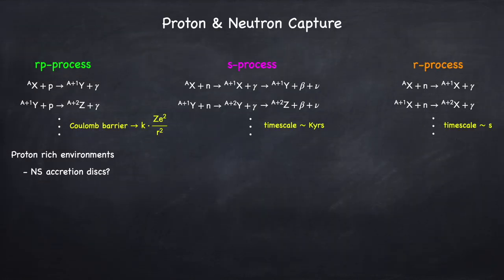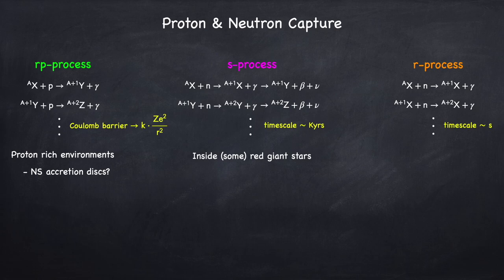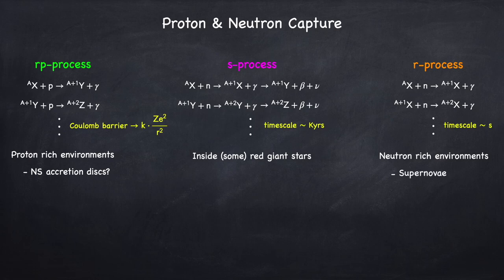Where do these processes take place? The S process takes place in certain types of red giant stars. I said at the beginning of this video that you cannot fuse beyond iron inside of stars, but that's not strictly true for the S process — this actually does take place inside of stars. For the R process, you need to have a lot of neutrons around, so you need to be in a neutron-rich environment. If you open any introductory astronomy textbook, they will pretty much all say that the R process takes place in supernovae. And for a while that's what people thought. They would run simulations of supernovae and had no problem making everything from iron to uranium. The problem was, initially these simulations did not include neutrinos. Then people started including neutrino physics and found that there was a problem.